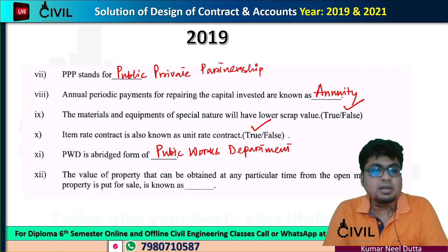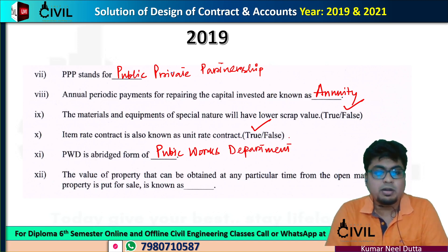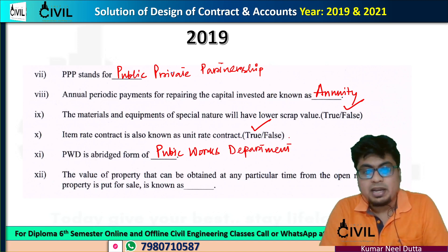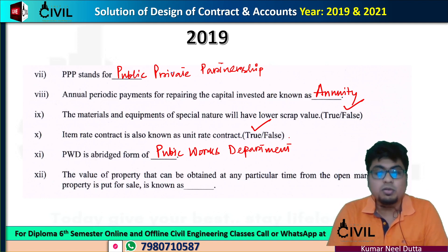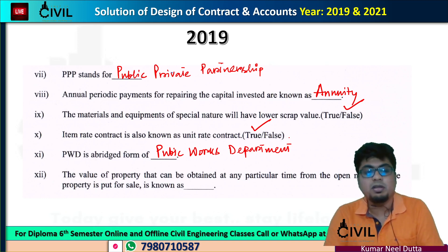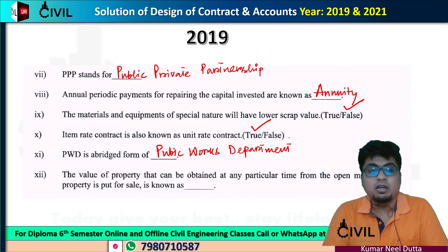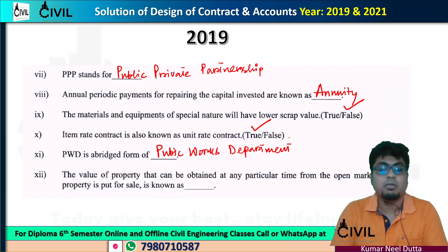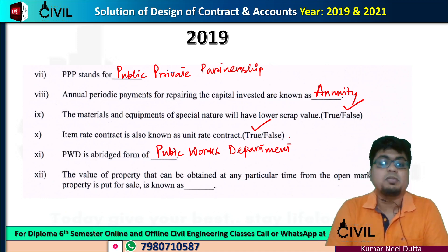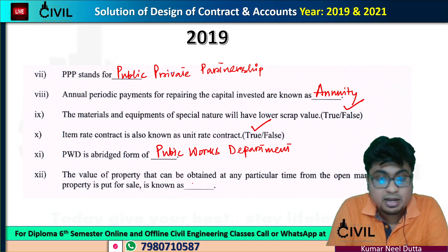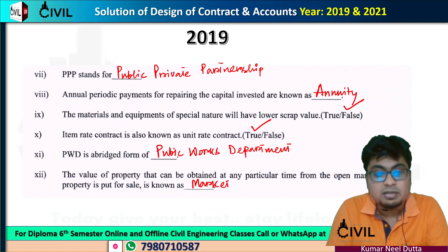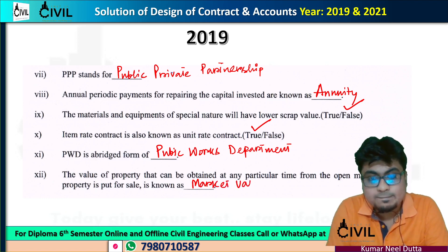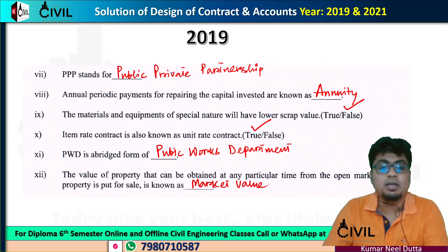Next, the value of property that can be obtained at any particular time from the open market. At any particular time, if you want to sell the property in the open market, that price is known as market value. Market value meaning varies time to time. So it will be market value.